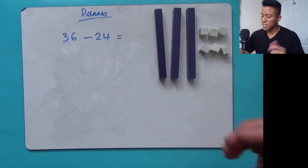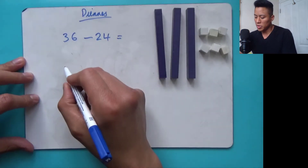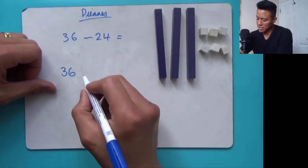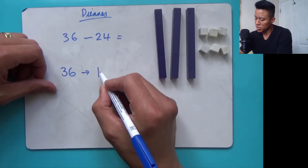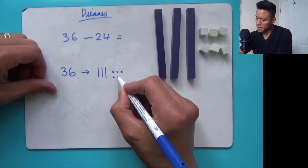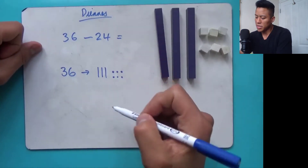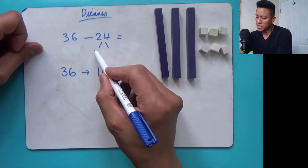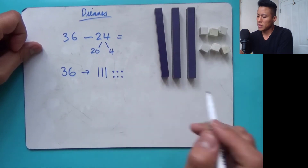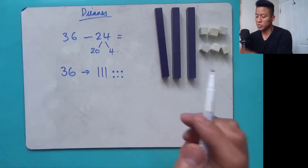We've got 36 and we're going to subtract 24. If you want to write it out because you don't have your deans, let's make some pictorial representations. My minuend is 36: three tens and six ones. Now we're going to subtract 24. If I partition this to expose the expanded form of 20 and four, then we know we're going to subtract two tens and four ones.